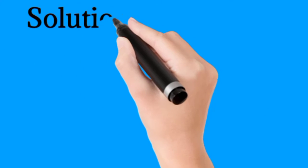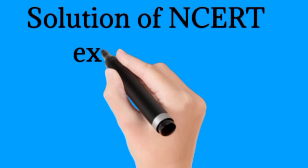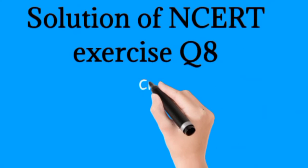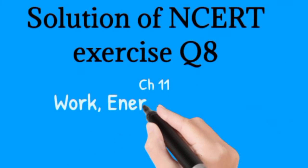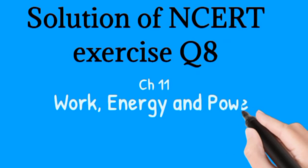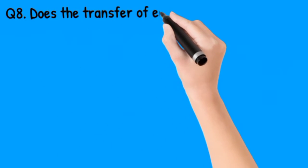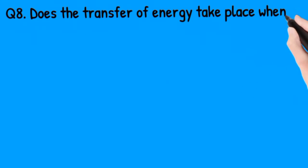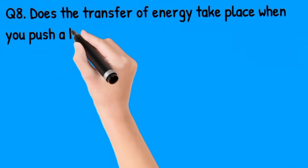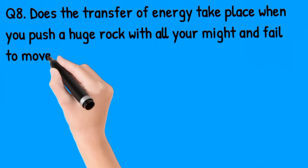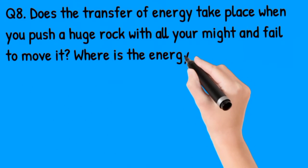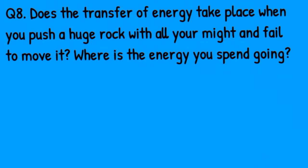In this video, we will learn about the solution of NCERT Exercise question number 8 of chapter 11, Work, Energy and Power from class 9. The question says: does the transfer of energy take place when you push a huge rock with all your might and fail to move it? Where is the energy you spend going?